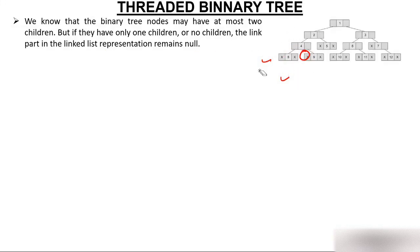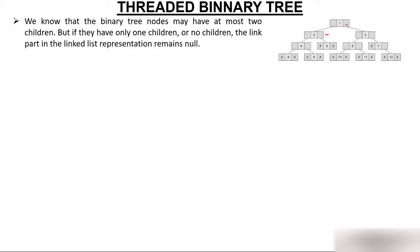Looking at the diagram, a node is generally represented by three parts: data, pointer to the left child, and pointer to the right child. For example, the root node's left child pointer holds the address of that child, and similarly for the right. But if we look at node 5, it has neither a left child nor a right child, so both pointers contain null. The same applies to leaf nodes 8, 9, 10, 11, and 12.